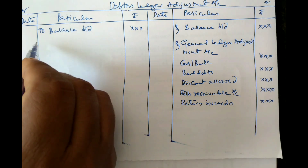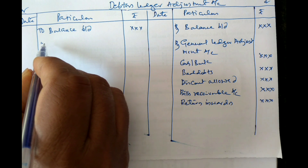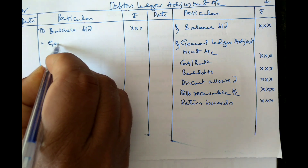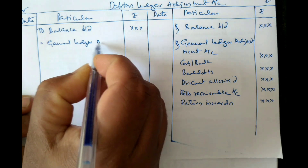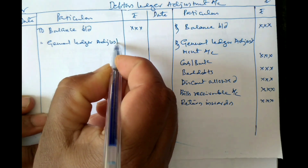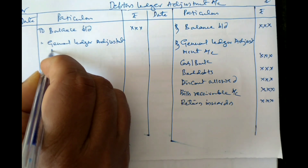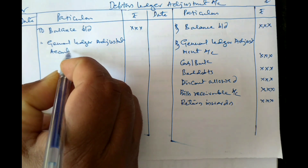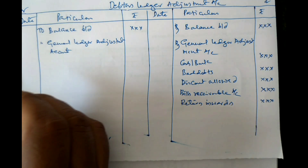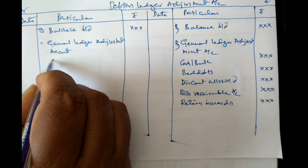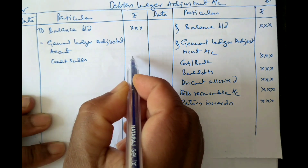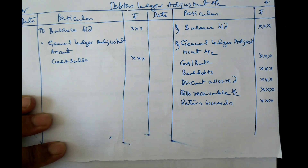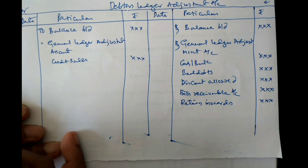The debit side items are also passed through the General Ledger Adjustment Account. On the debit side, we may have entries such as credit sales. Credit sales is the item which must be taken to the debit side of the Debtors Ledger Adjustment Account.